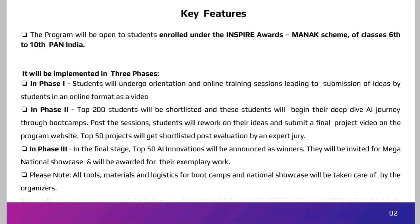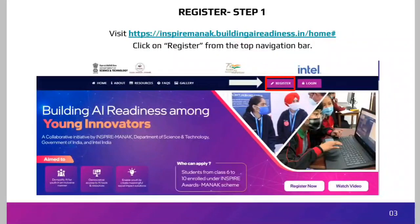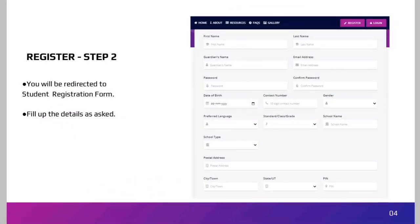You will see the portal open with a Register button — click on that. A registration form will open. In Step 2, you will be redirected to the student registration form. Fill in the details as asked: first name, last name, guardian's name, email address, password, date of birth, contact number, gender, preferred language, class/standard, school name, school type, postal address, city, state, and pin code.